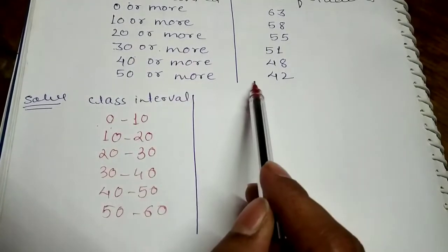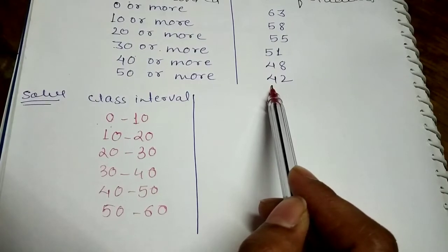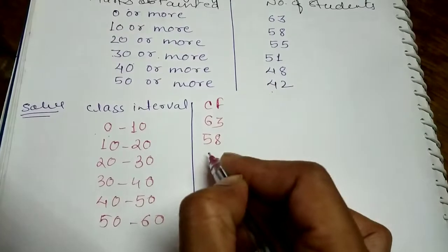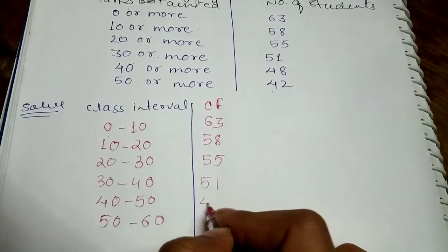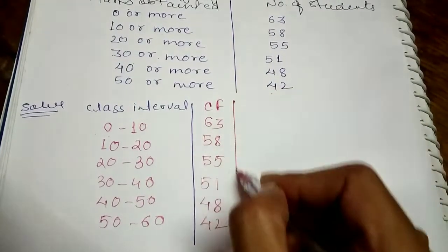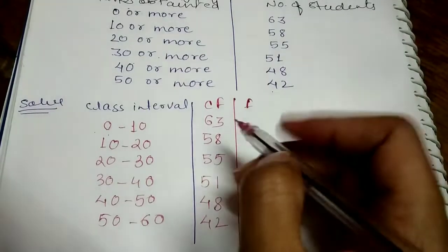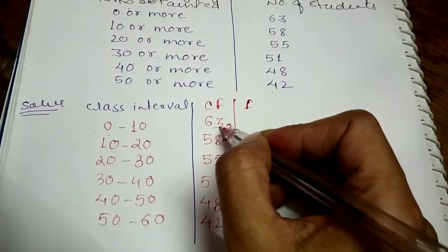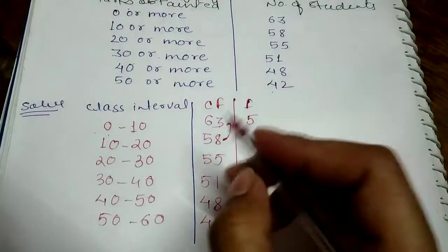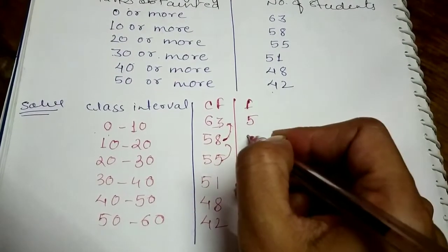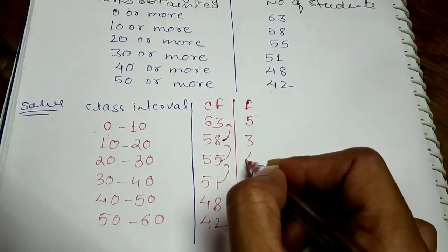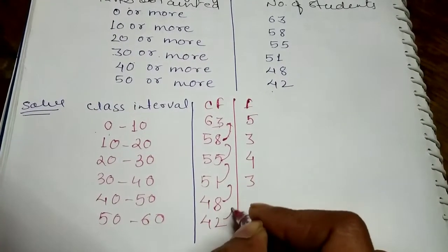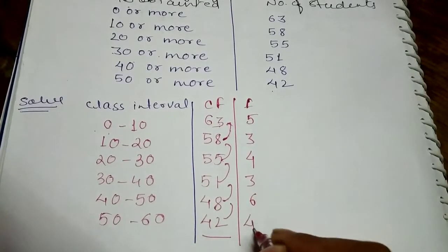Now we have to find the individual frequency by subtracting cumulative frequency terms. We minus these terms: 58 minus 55, then 42 minus the next value. After subtracting, we get values such as 3 and 42. The last term remains as 6, giving us 42.